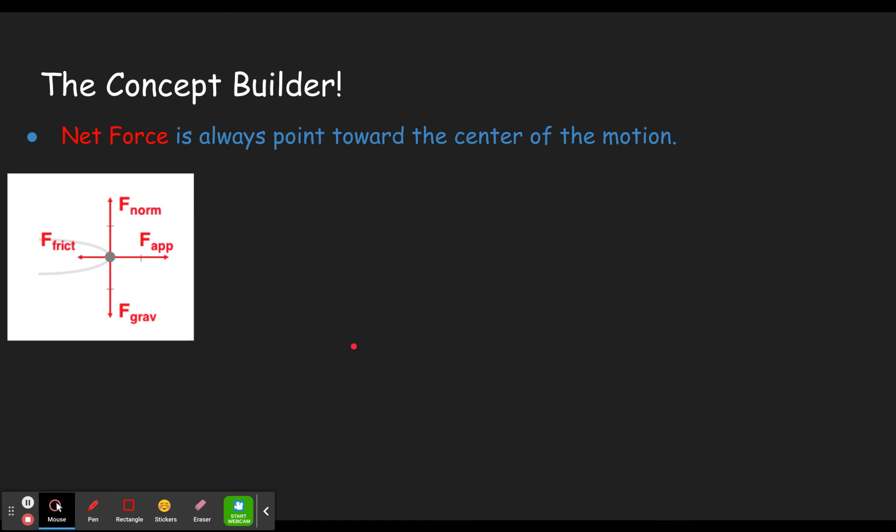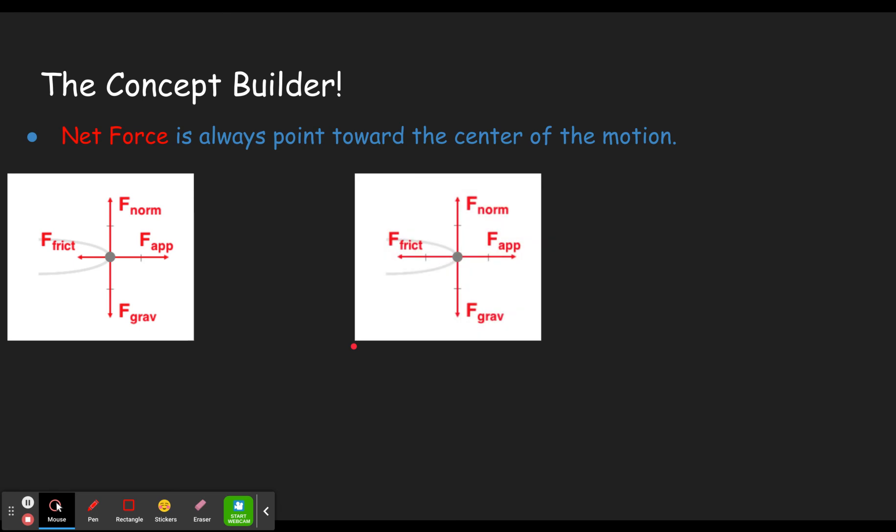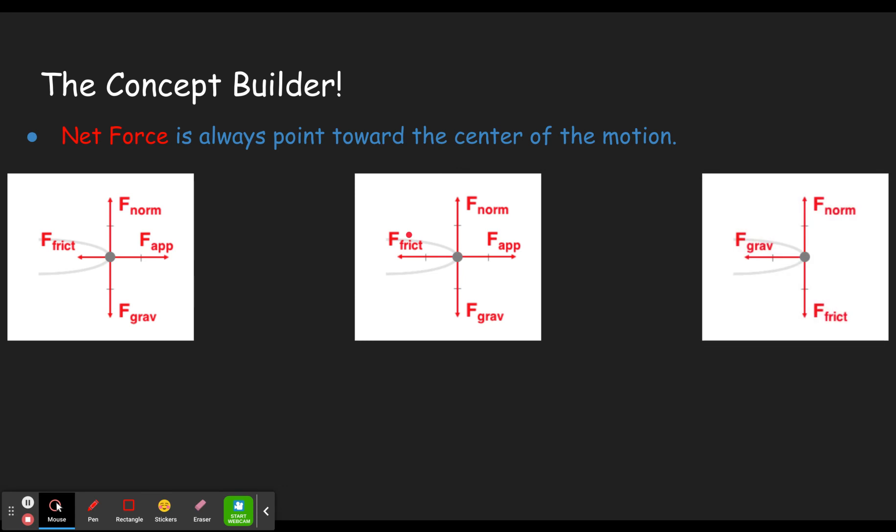So this next one we could also eliminate because these two cancel out. These two cancel out and so there's no net force here whatsoever. So whatever this object is doing here would keep going in a straight line in that direction. And so it's not curving in this circle because there is not a net force towards the center. Finally we have a net force that is towards the center.